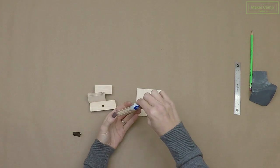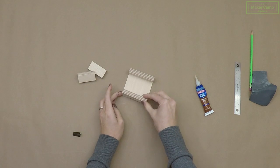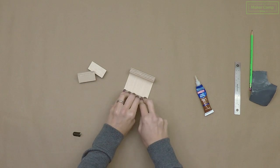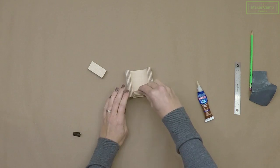Now assemble your base using some wood glue. The long sides are 3 inches by 1 inch tall, and the short sides are 2 inches long by 1 inch tall. The bottom piece is 3 inches square.